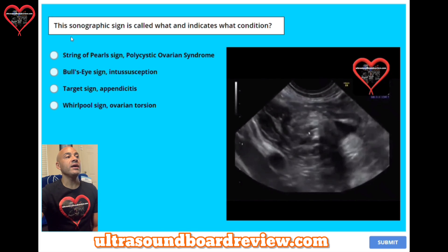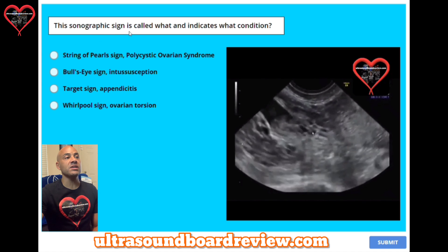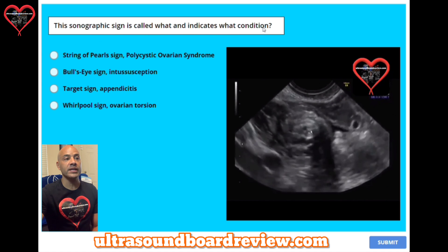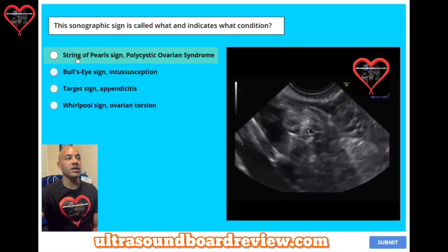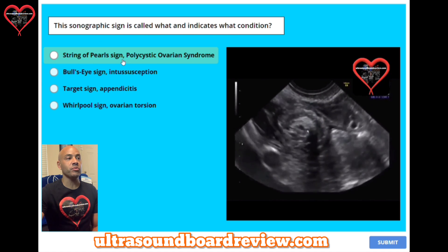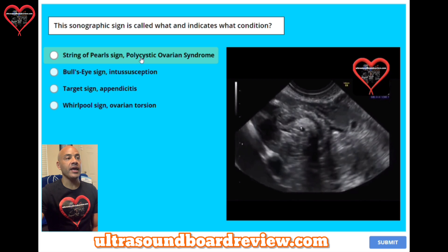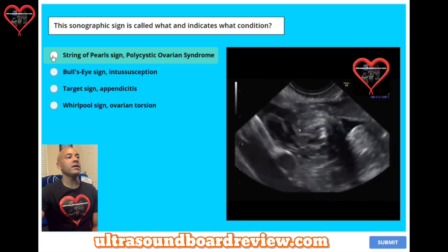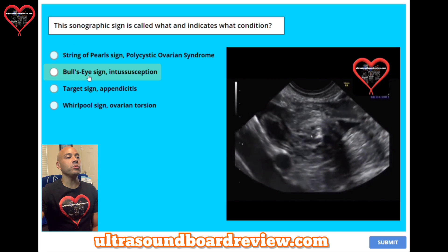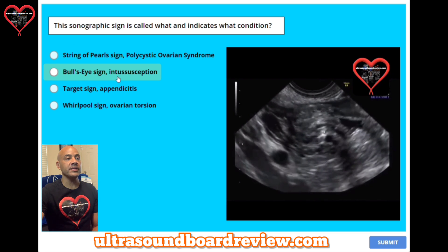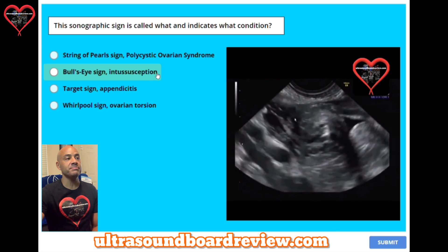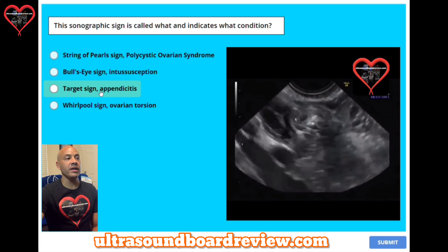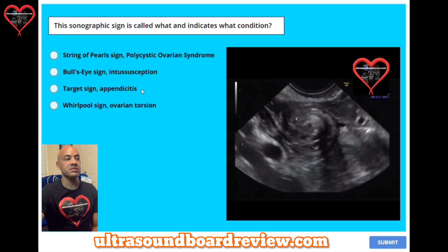Question 32. This sonographic sign is called what and indicates what condition? A: String of Pearl sign and polycystic ovarian syndrome. B: Bullseye sign and intussusception. C: Target sign and appendicitis. Or D: Whirlpool sign and ovarian torsion.